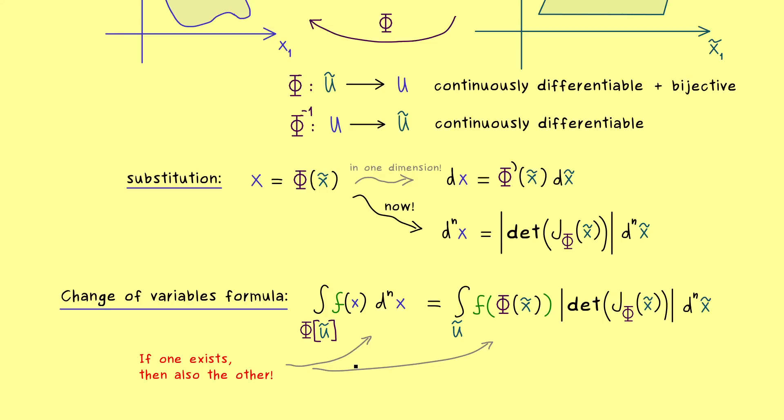Moreover, one important claim of this change of variables formula is if one integral exists then also the other. This means for applications you can always apply this formula for a measurable function f. Under this transformation, the value of the integral stays the same. Most importantly, you can apply it in one direction or the other regarding which side is simpler for your particular problem. This means that the domain could be much simpler on one side, or even the function is much easier to integrate on one side.